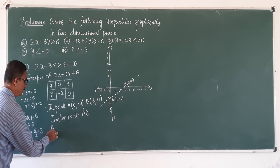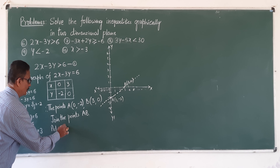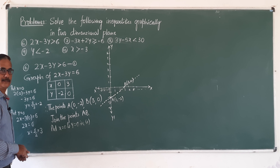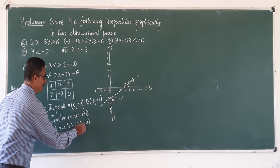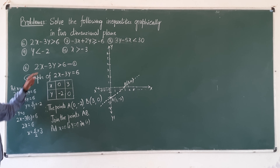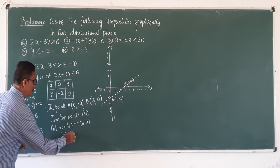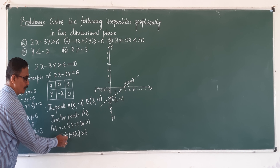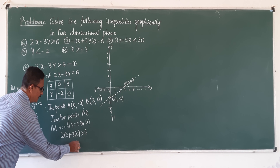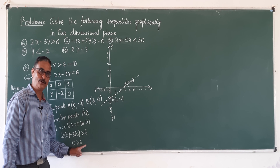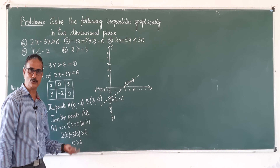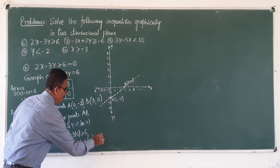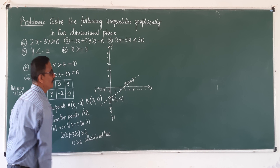Next step: put x equal to 0 and y equal to 0 in the given inequality. For convenience, take the point (0, 0). 2 into 0 minus 3 into 0 greater than 6, that is 0 greater than 6. Check whether 0 is greater than 6 — which is not true.